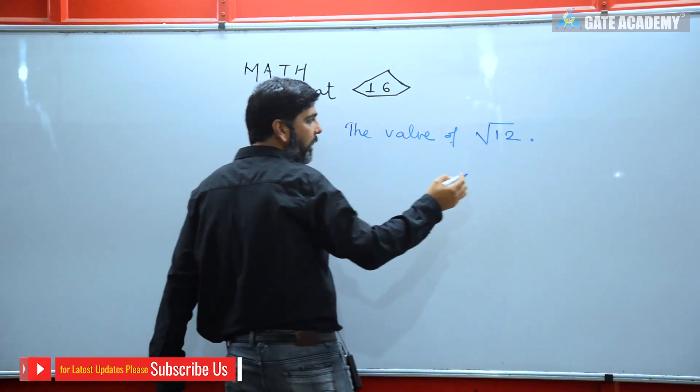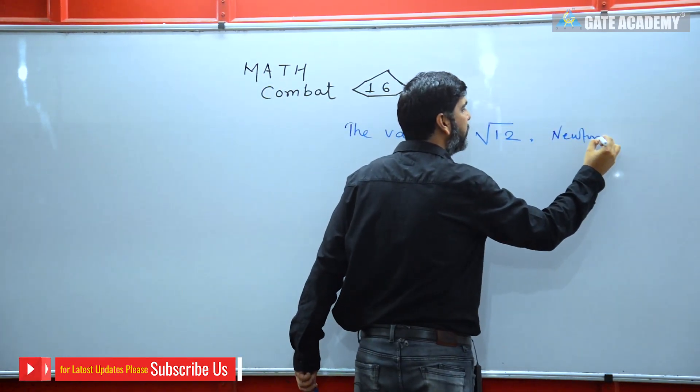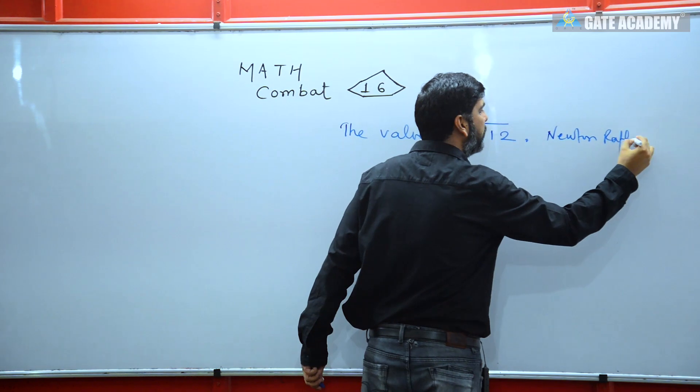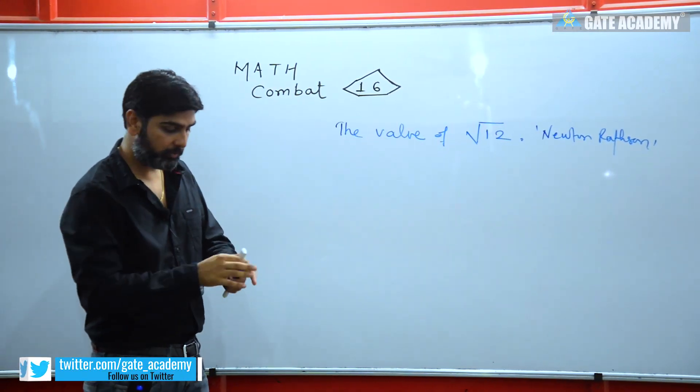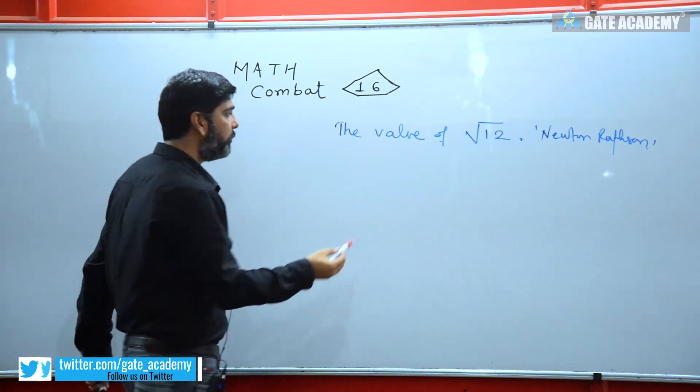You can solve it using Newton-Raphson's method. Because you have options given, you can see how many options are available. Under root 12, you need to find the value of this.